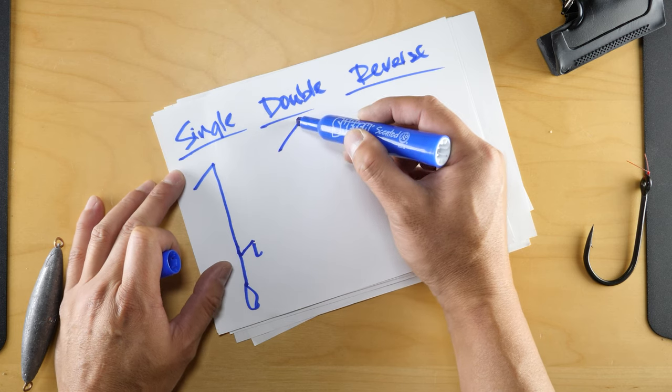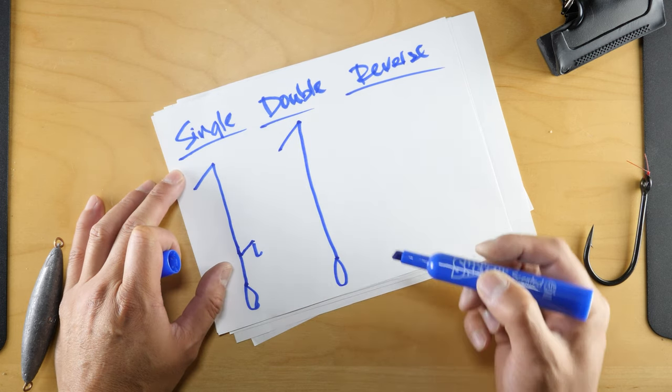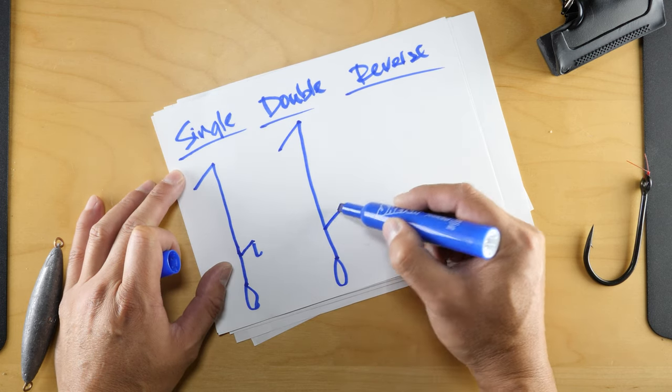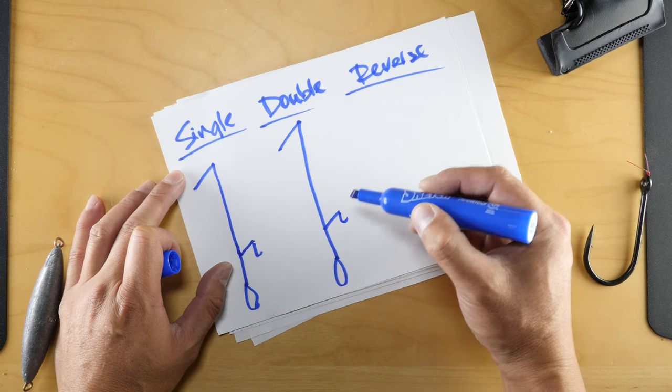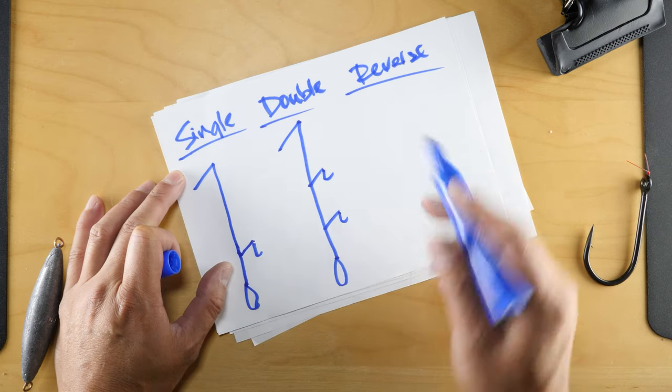On the double, very similar—torpedo on the bottom and one knot out for a single hook, another out, that makes it a double.